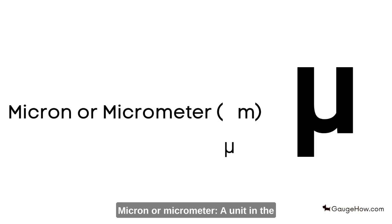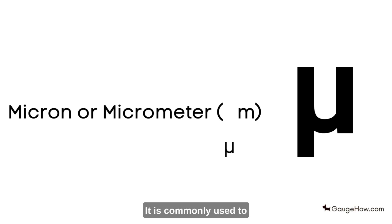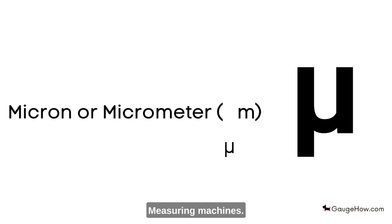Micron or Micrometer: A unit in the metric system equal to one millionth of a meter, or approximately 0.00003937 inches. It is commonly used to describe the uncertainty of precision measuring machines.